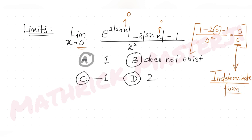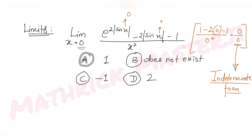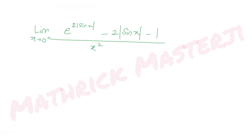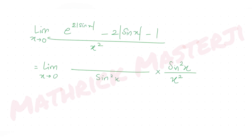Since we have an indeterminate form, I can apply L'Hôpital's rule. We have limit x→0 of [e^(2|sin x|) - 2|sin x| - 1] / x². Since all numerator terms involve sin x, I'll multiply and divide by sin²x, rewriting as [e^(2|sin x|) - 2|sin x| - 1] / sin²x, multiplied by sin²x / x².